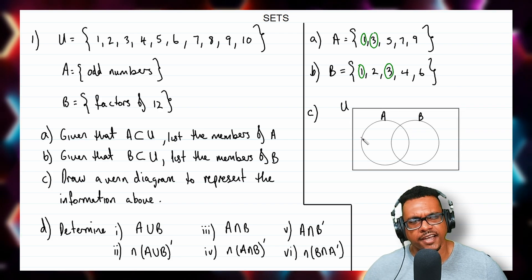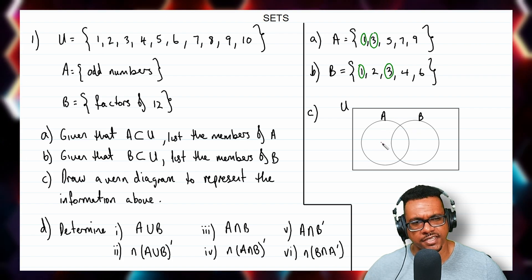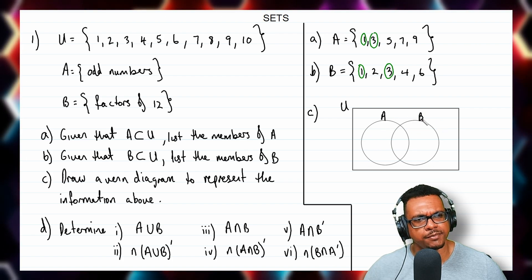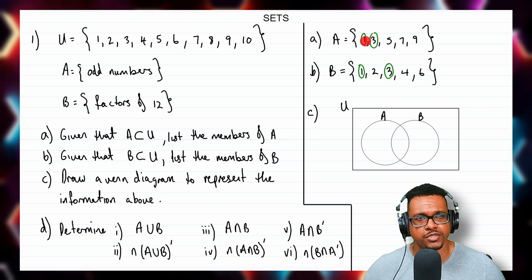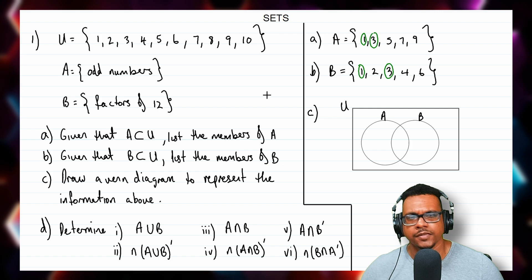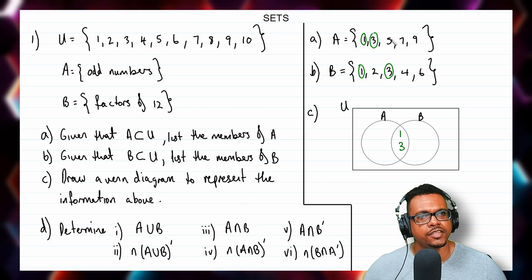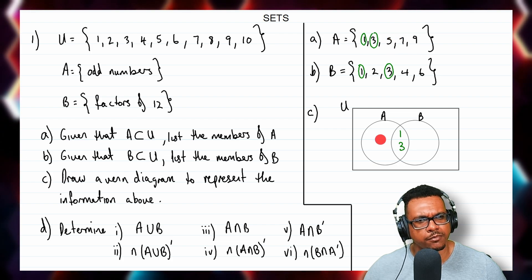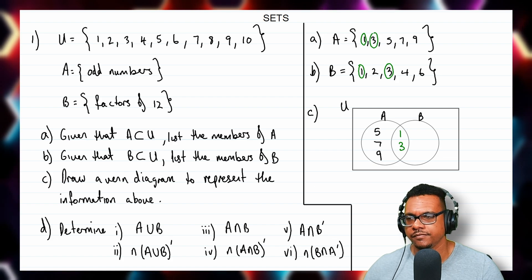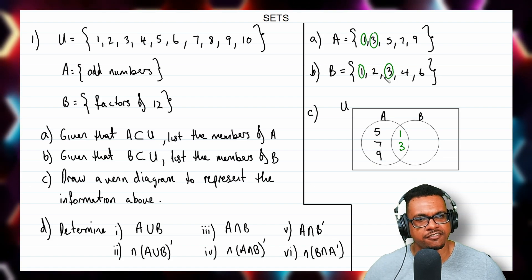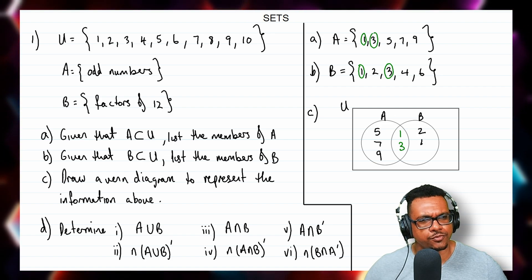Here is the structure for the Venn diagram: a rectangle to contain the universal set, one circle for the elements of A, and another circle for the elements of B. First, we place the elements they have in common — 1 and 3 — in the intersection. Then the remaining members of A, which are 5, 7, and 9, go in the A-only region. The remaining elements of B — 2, 4, and 6 — go in the B-only region.